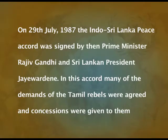Tamil people in India wanted the government of India to protect the interests of Tamils in Sri Lanka. The government of India was negotiating with the Sri Lankan government, but it was only in 1987 that India got directly involved in this conflict. On 29th July 1987, the Indo-Sri Lankan Peace Accord was signed by then Prime Minister Rajiv Gandhi and Sri Lankan President J.R. Jayewardene. Under this accord, many demands of the Tamil rebels were agreed to, and India also agreed to establish order in the North and East of Sri Lanka by sending troops.